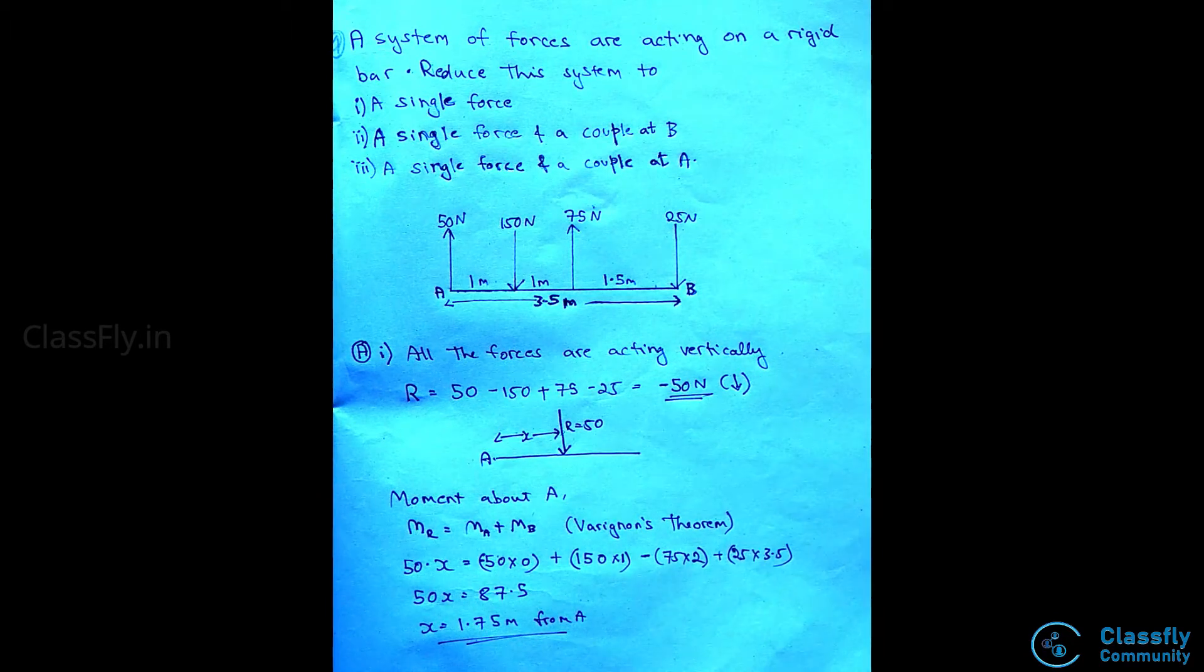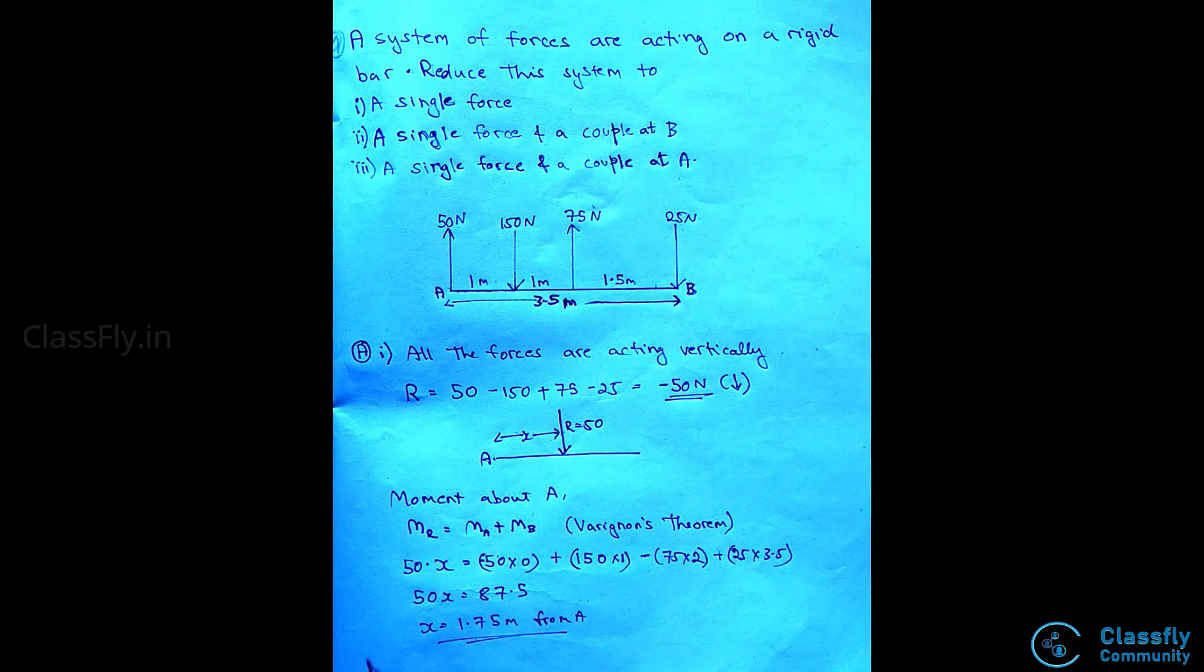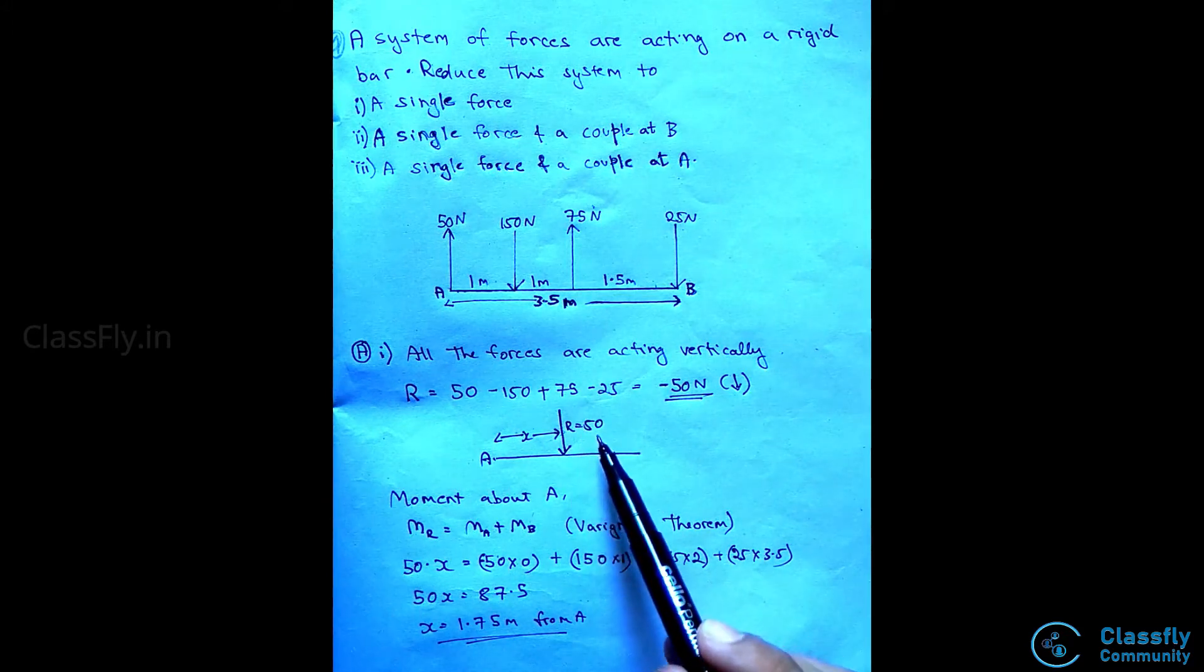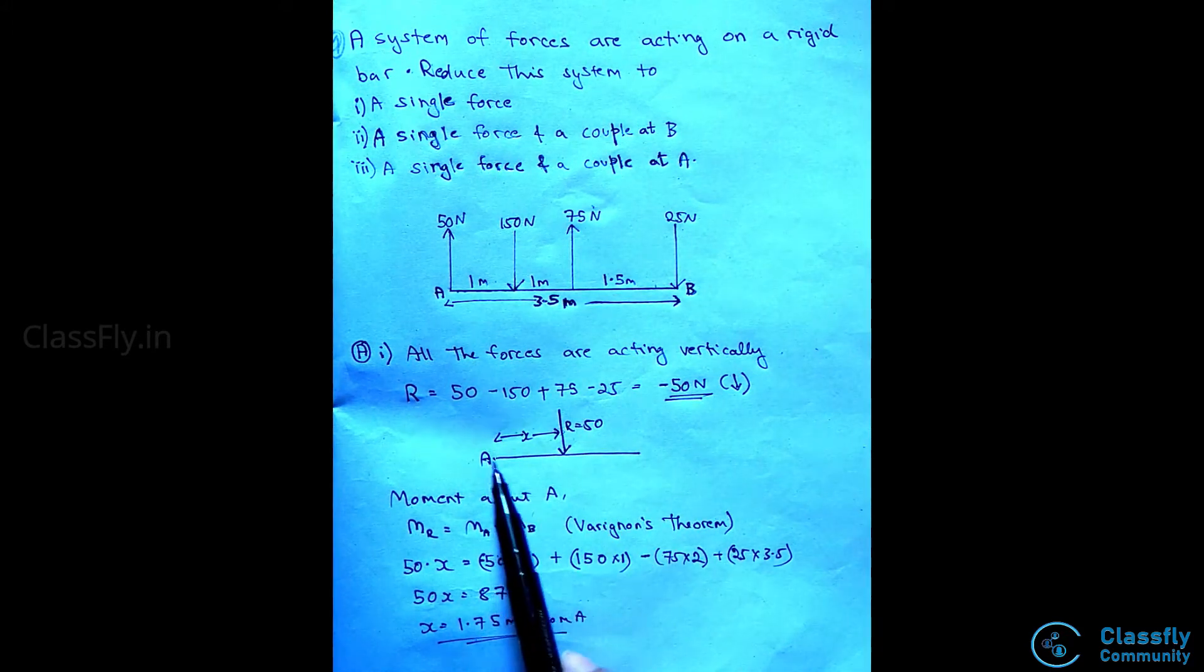On solving this, we get 50x equals 87.5. Hence, the value of x will be 1.75 meters. This states that the resultant will act at a distance of 1.75 meters from point A.